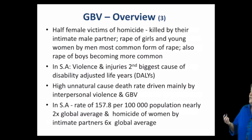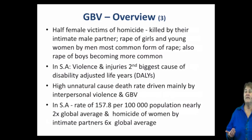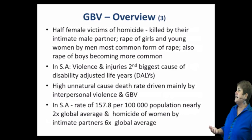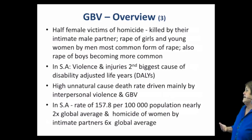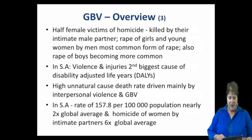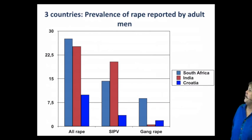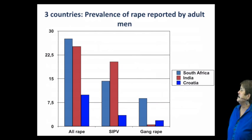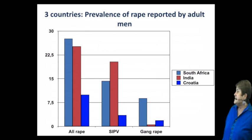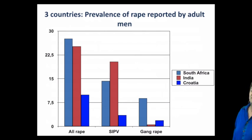In South Africa specifically, our rate is twice the global average. A woman killed by intimate partners is nearly 158 per 100,000 population — nearly twice the global average for homicide of women, and six times the global average for killing by intimate partners. Looking at cross-country comparisons, South Africa leads in rape rates, followed by India and Croatia. For sexual intimate partner violence, India has the highest prevalence, while gang rape is particularly high in South Africa.